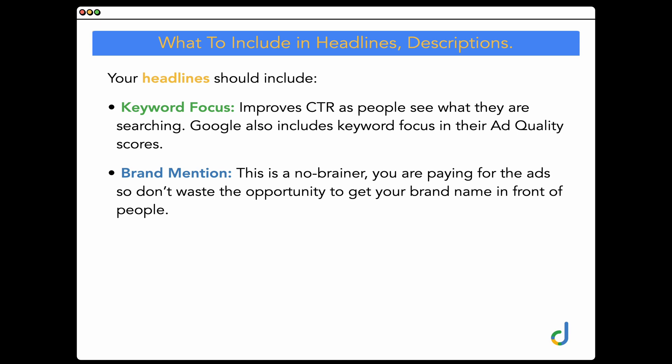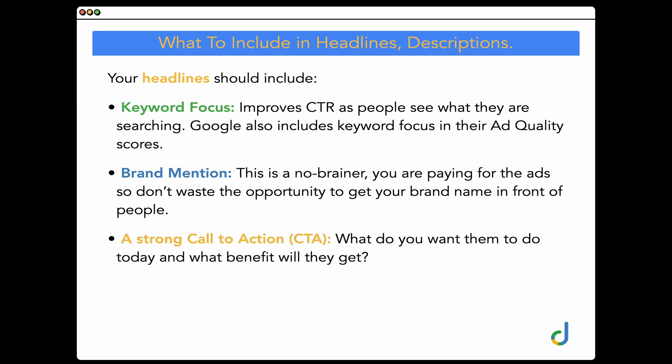The third element — where people most commonly miss out — is a strong call to action. With a CTA you want to give a clear instruction of what you want them to do today and what benefit they'll get. The powerful premise here is that you're introducing the desired action before they even get to your website. If you want them to fill out an inquiry form or get a free quote, putting that in your ad copy pre-primes them so they see that same messaging when they arrive at your site — whether it's 'get a free quote today' or 'shop now for 20% off.'